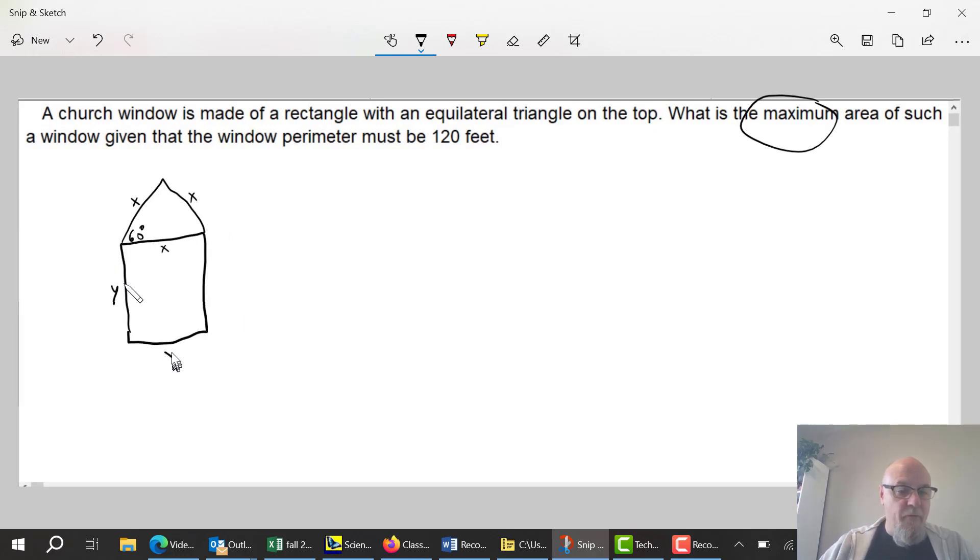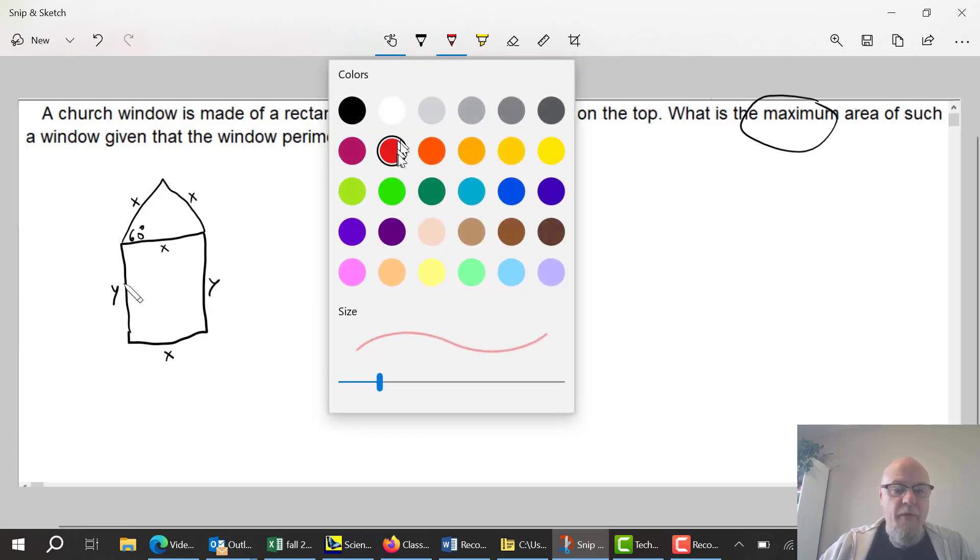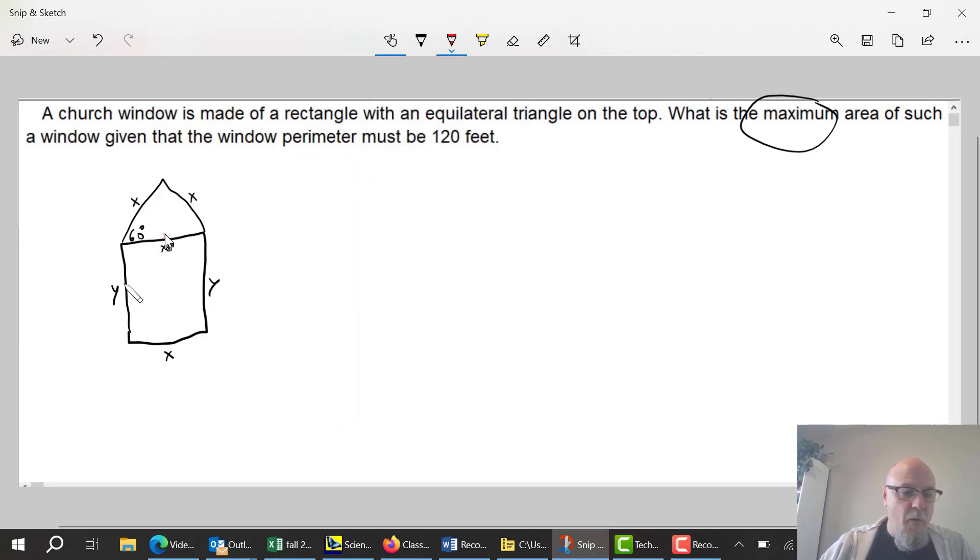We want to maximize the area, so the area of the rectangle is X times Y. The area of a triangle is base times height. Oh, if I need to know the height, I need to know what this distance is here for a half base times height.